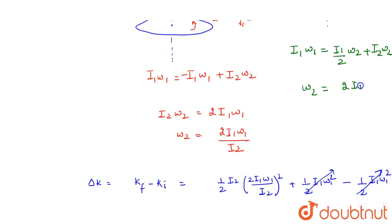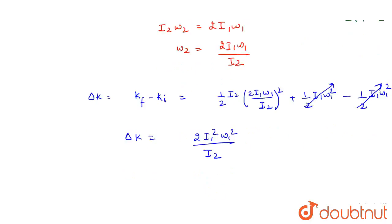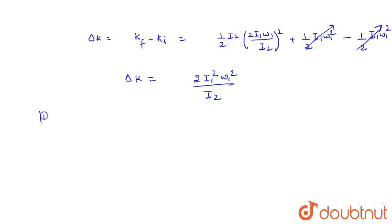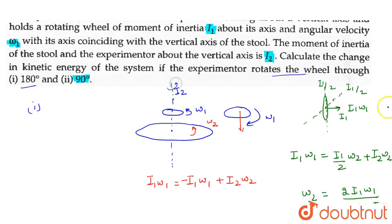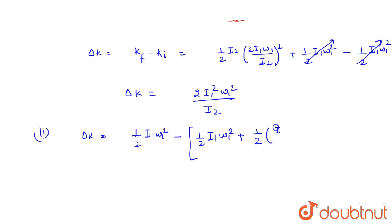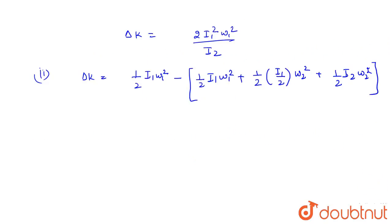2 times i1 omega1 divided by i1 plus 2i2. The change in kinetic energy: delta K equals to initial kinetic energy 1/2 i1 omega1 squared minus the final kinetic energy, which will be the disk's 1/2 i1 omega1 squared plus 1/2 i1 omega2 squared plus 1/2 i2 omega2 squared.